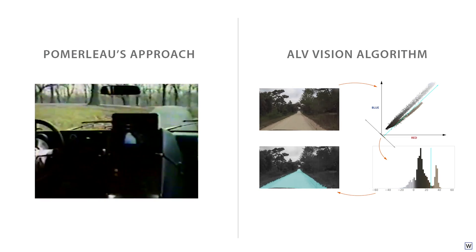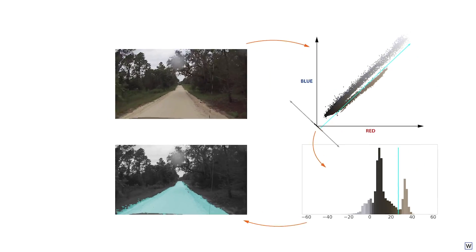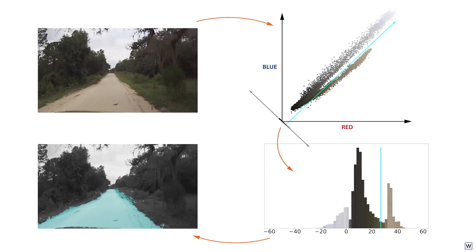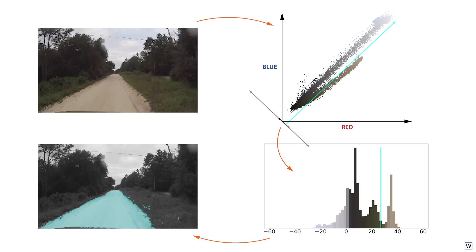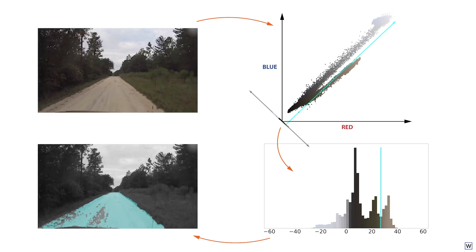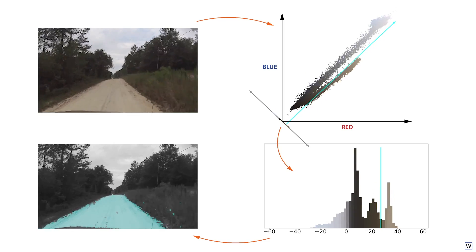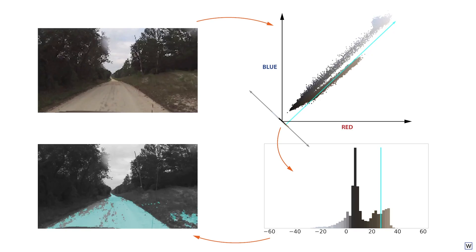To get a sense for how Pomerleau's solution worked, let's briefly revisit the ALV, zoom out a little, and think about how the whole system worked. Last time, we discussed how the ALV team used color-based segmentation to pick out road pixels in images.